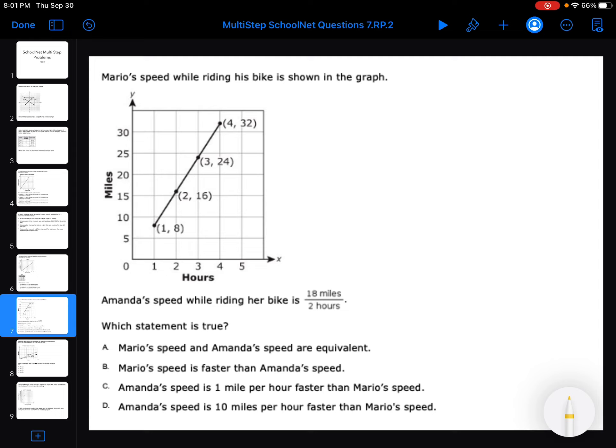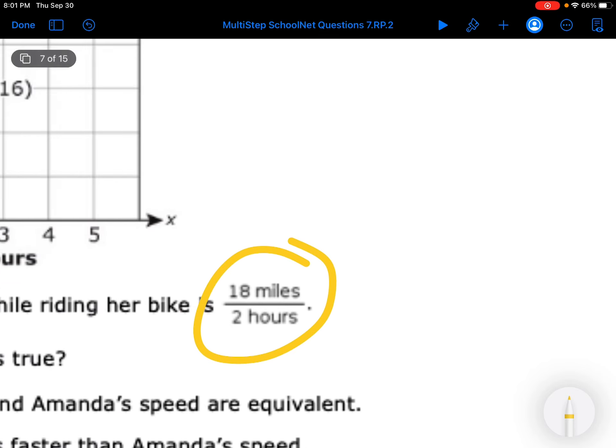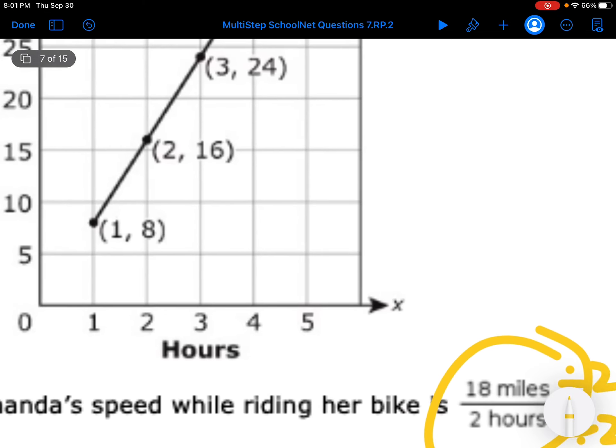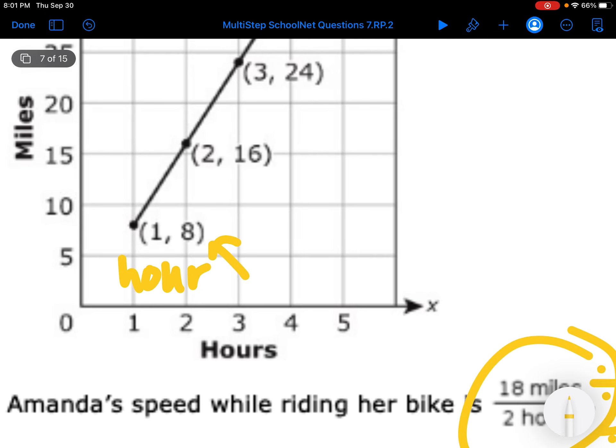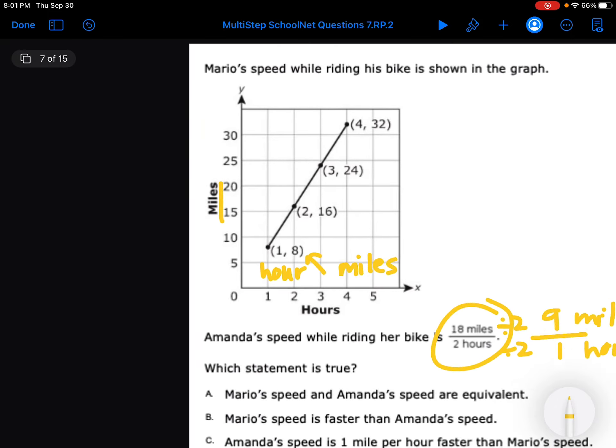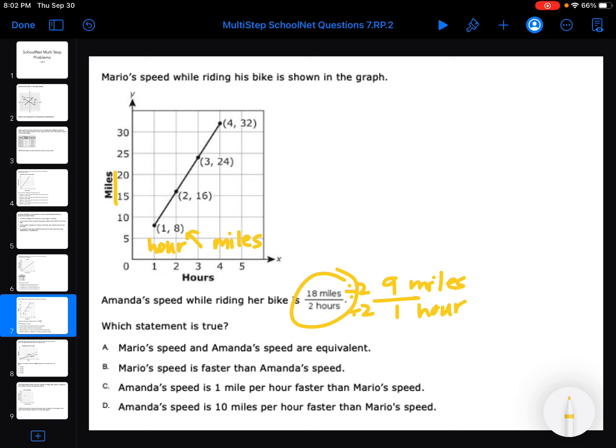Mario's speed while riding his bike is shown in the graph. Amanda's speed on her bike is shown here. Which statement is true? So I have to find for one. So if I simplify my fraction, so it's 9 miles in one hour. And this is one hour, and that would be 8 miles. So this is Mario, and this is Amanda. So Mario's speed and Amanda's speed are equivalent. No, they're not equal to each other. Mario's speed is faster than Amanda's. No, because she's going 9 miles, he's only going 8. Amanda's speed is 1 mile per hour faster than Mario's. I think that's right. Amanda's speed is 10 miles per hour faster than Mario's. Nope.